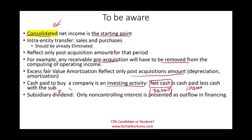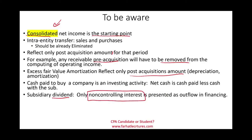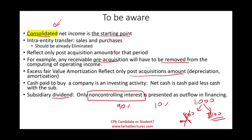We also have to be aware of dividends. Dividends are a financing activity. How do we account for dividends? We only account for the non-controlling interest portion. If we purchase 90% of a company, we don't own 10%. If the subsidiary paid $1,000 in dividends, $900 is ours — there's nothing we need to do about that. The only thing we account for is the $100 of dividends paid to the non-controlling interest. The best way to illustrate this is with a comprehensive example.